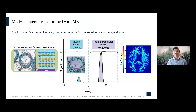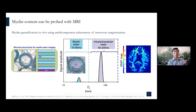As you should already know, myelin is quite important, and we can actually probe myelin content with MRI. Traditionally, we can probe that with multiple component relaxometry of the transverse magnetization by collecting echo data, and we can segment the shorter T2 component to attribute to myelin water, which represents the myelin integrity and content, and we can use that to produce this kind of myelin water map.